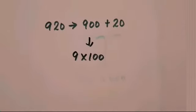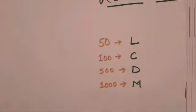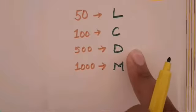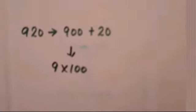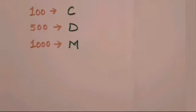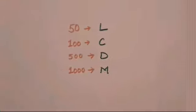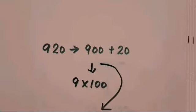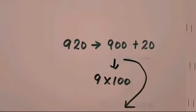Since it is not possible to represent 900 using C nine times, and 500 is also too far from 900, we look to 1000 for help. We know 1000, so this is the time to take the help of 1000. We can represent 900 as 1000 minus 100, which equals 900.